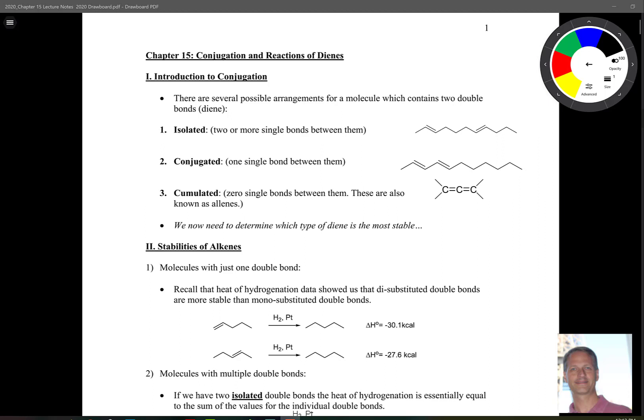I'd like to start off our discussion of organic chemistry this semester with chapter 15. It's really a fun chapter. It deals with conjugation, reactions of dienes, and then some lab topics involving ultraviolet spectroscopy. So to start off here, what I want to look at are three different types of arrangements of double bonds.